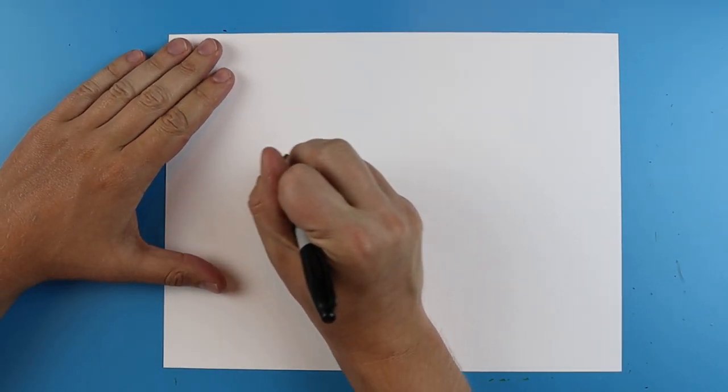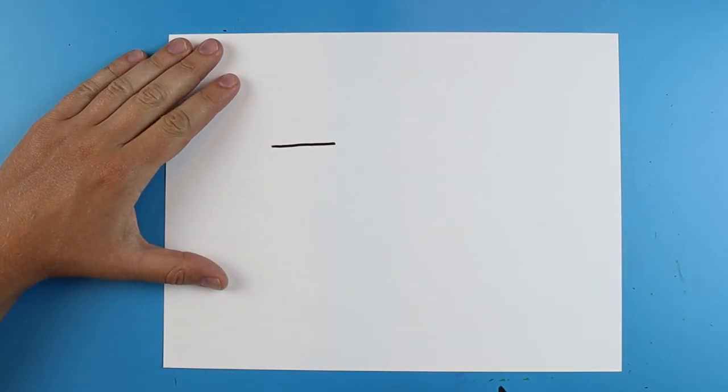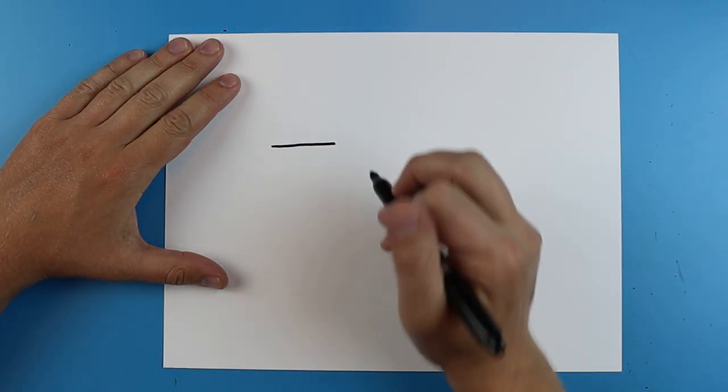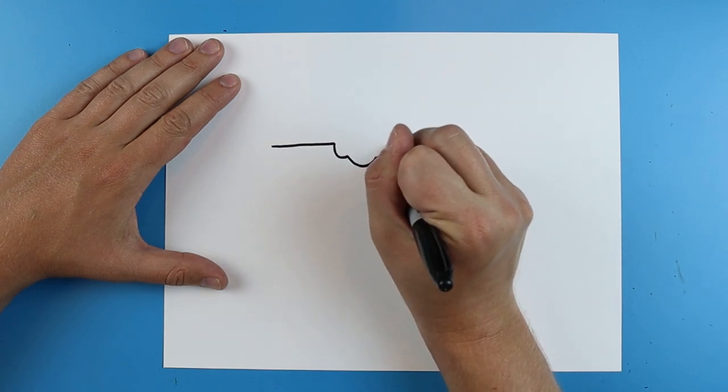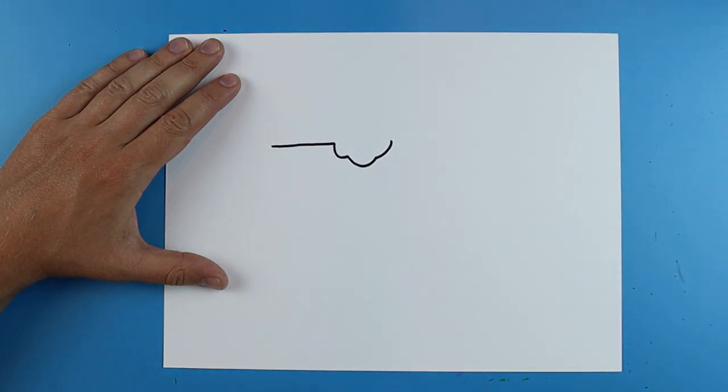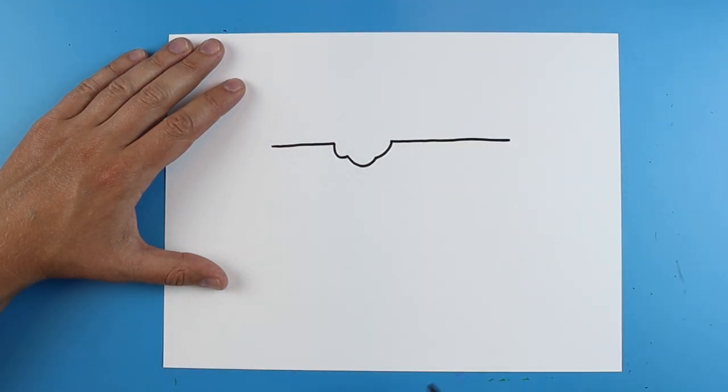So to start off with this I'm going to start right here and I'm just going to draw a line that goes right to about there. Then I'm going to put a couple little bumps in here so it kind of looks like it's got a bite taken out of it. Then I'm just going to continue this line over to here.